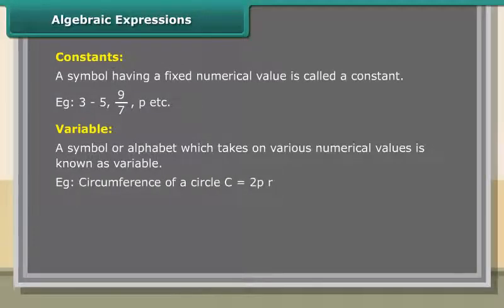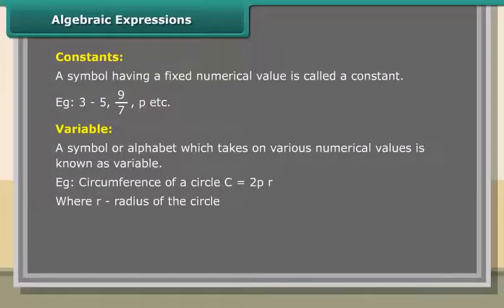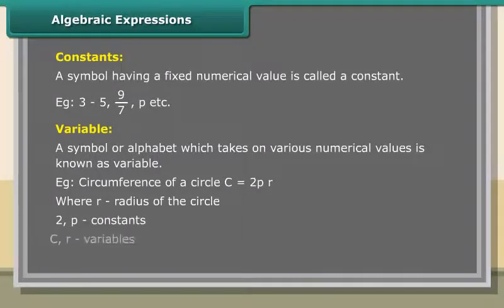of a circle, C = 2πR, where R is the radius of the circle. Here, 2 and π are constants, while C and R are variables.